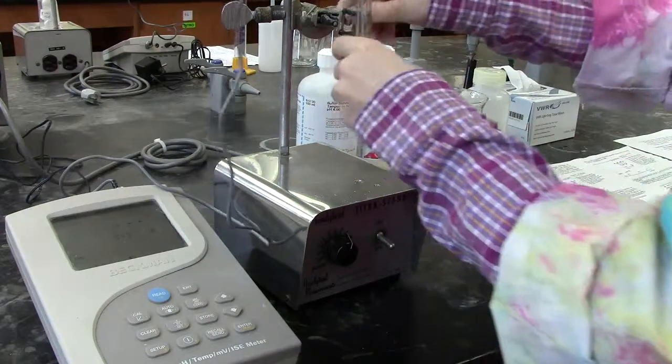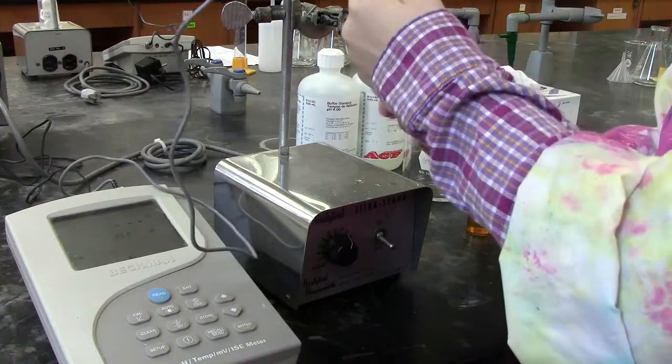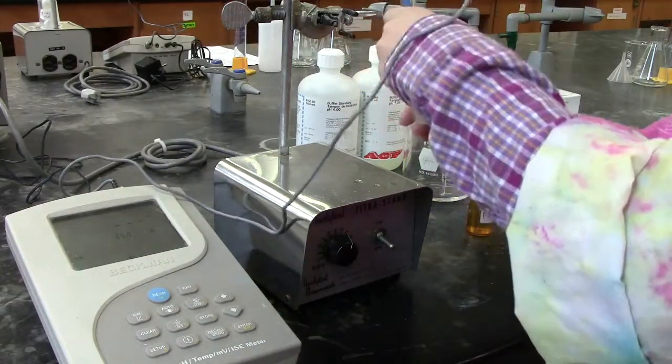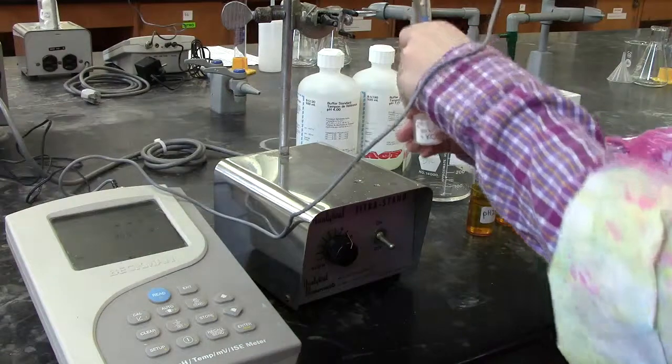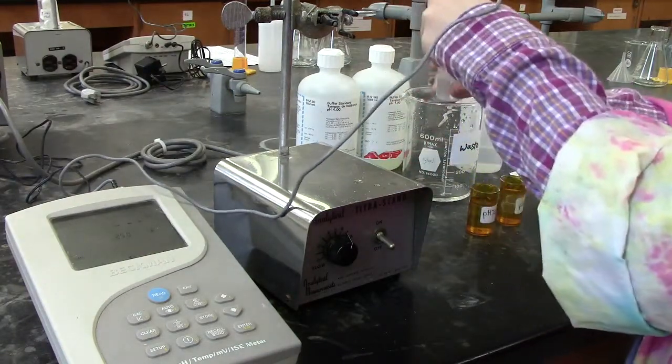The electrode must first be taken out of its storage buffer, and this can be done by just twisting the bottom. Ensure that the electrode is not left outside of the storage buffer for an extended period of time.